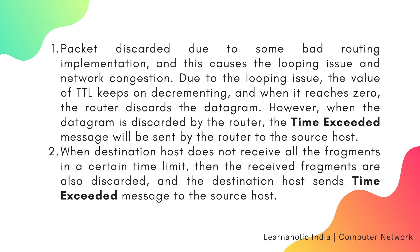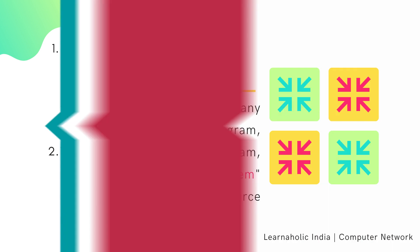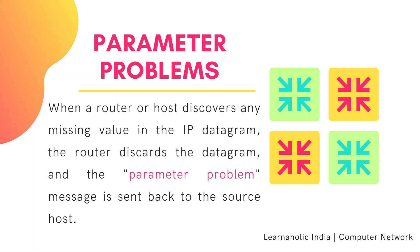The second way is when the destination host does not receive all the fragments within a certain time limit; the received fragments are also discarded, and the destination host sends a time exceeded message to the source host. Next, the error type is parameter problems. When a router or host discovers any missing value in the IP datagram, the router discards the datagram and a parameter problem message is sent back to the source host.